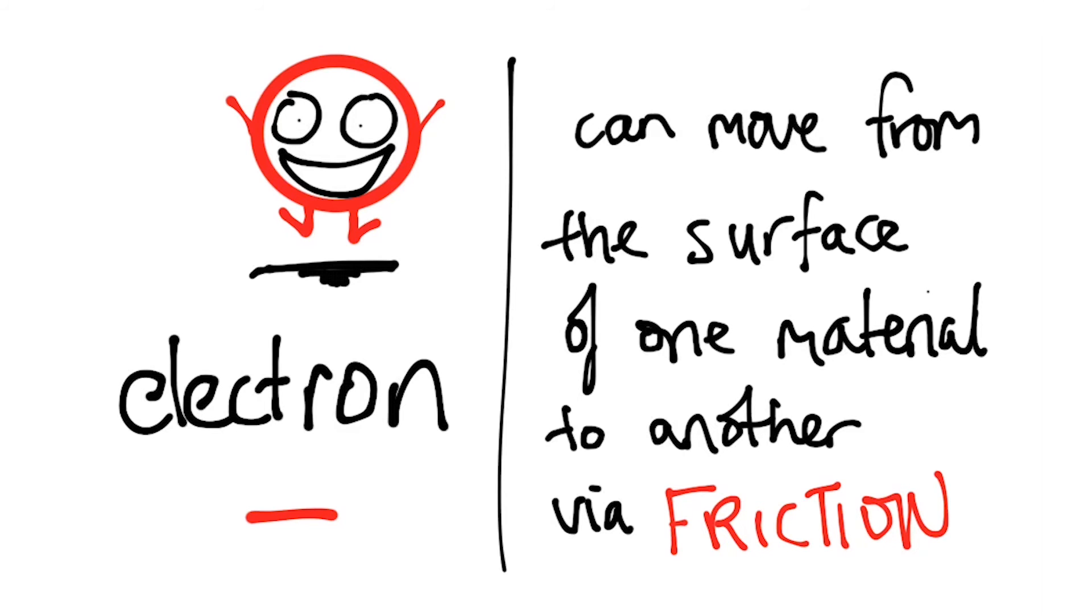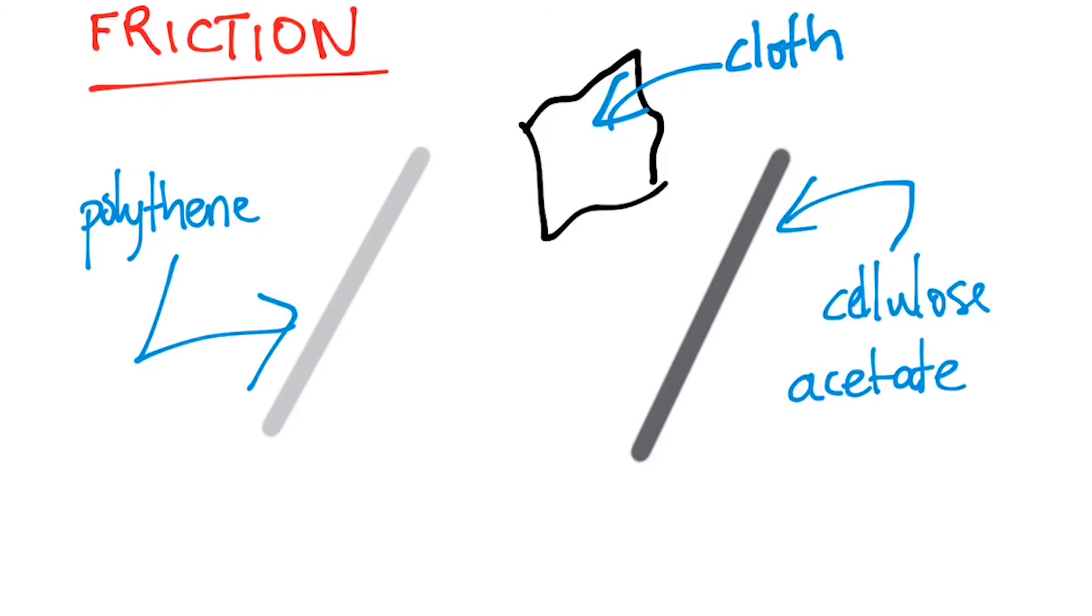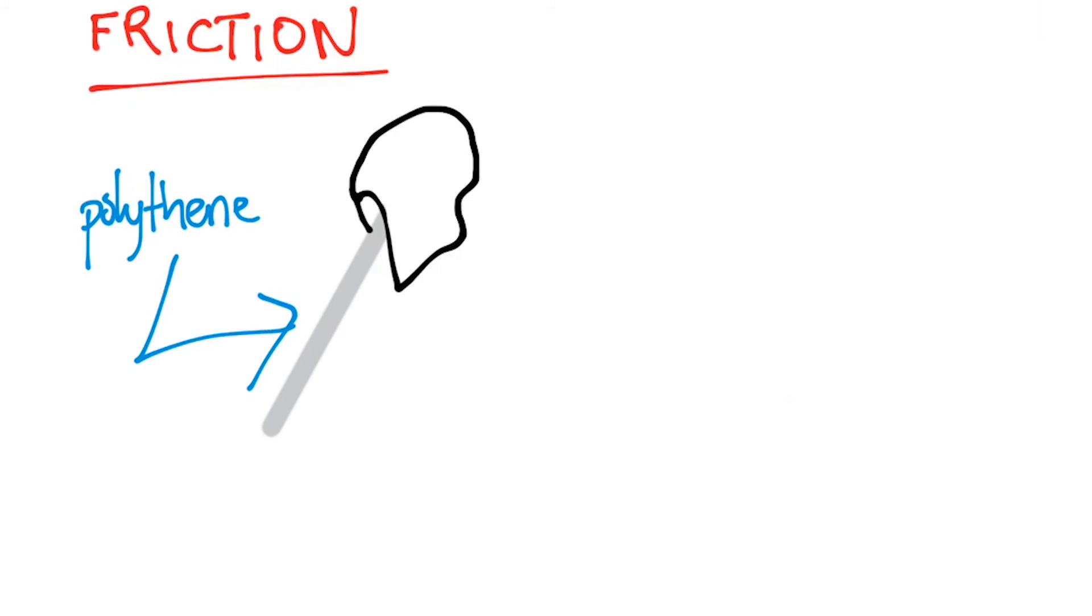The protons are kind of locked up in that nucleus, but the electrons can move from the surface of one material to another via friction. And speaking of friction, you need to know about the story of the polythene and the cellulose acetate rods. What happens if you take a cloth and rub either of them? One of them is going to be negative. It's going to be this guy, the polythene. So if I rub him, he's going to become negative. What's happening? Polythene is such a good insulator that it really loves its electrons. It's not going to lose anything. In fact, it's going to steal some from the cloth. And it's going to get more electrons, higher negative net charge. So he's just going to be negative.